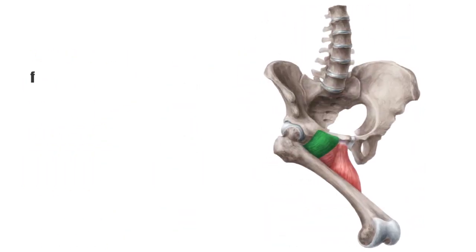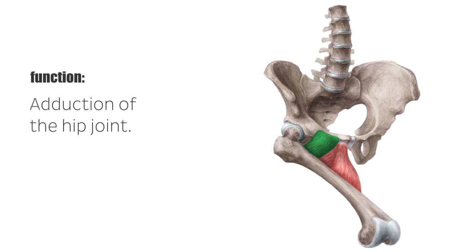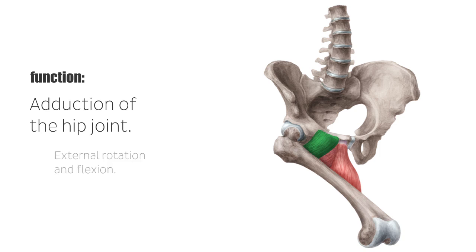As the name suggests, the main function of the hip adductors is the adduction of the hip joint. The pectineus muscle also supports external rotation and flexion. The hip adductors are particularly used when crossing one's legs. Overall, they play an important role in balancing the pelvis during standing and walking.